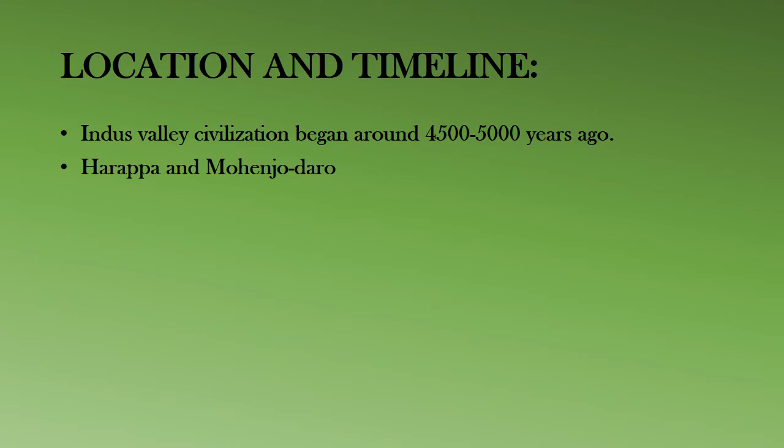The existence of this civilization came to be known when two important cities were discovered: Harappa and Mohenjo-daro. They were found on the banks of the river Indus. Since Harappa was the first city to be discovered, the civilization is also known as the Harappan civilization.